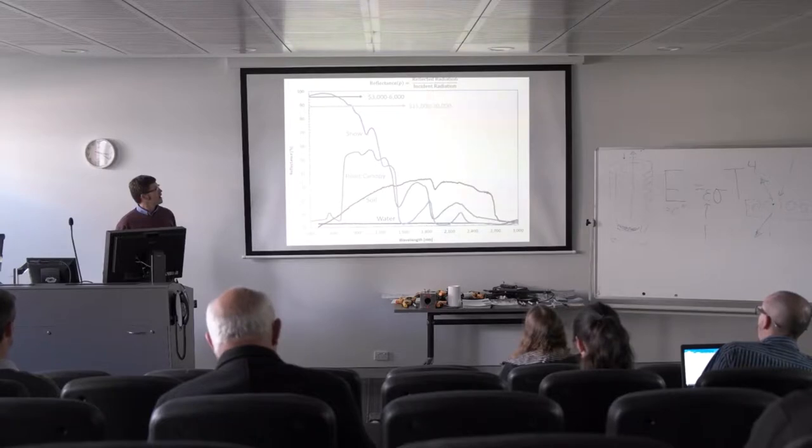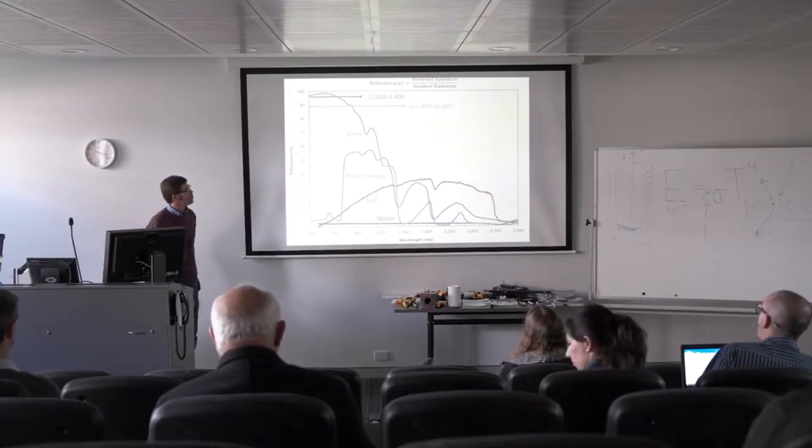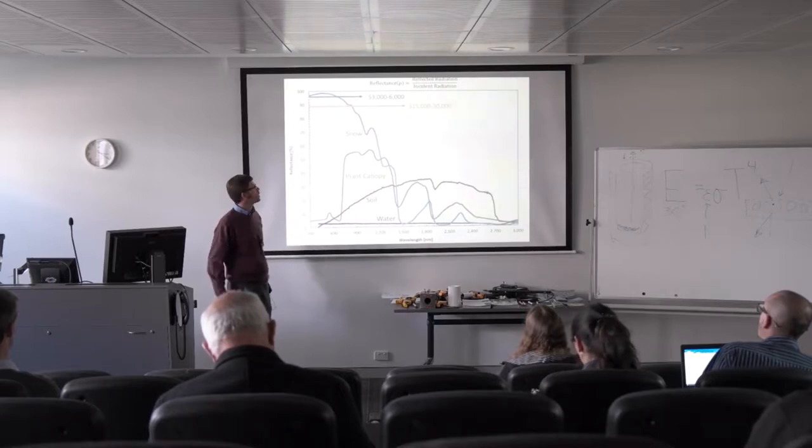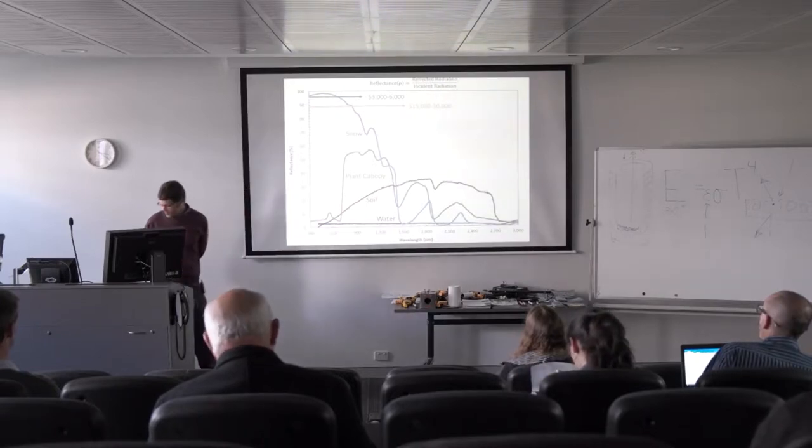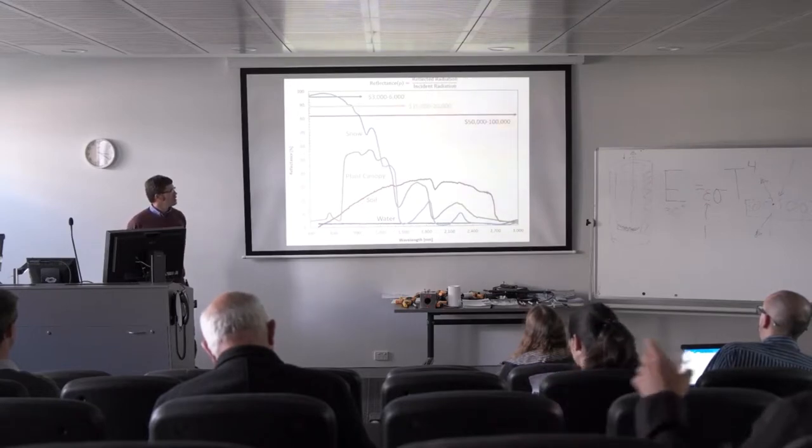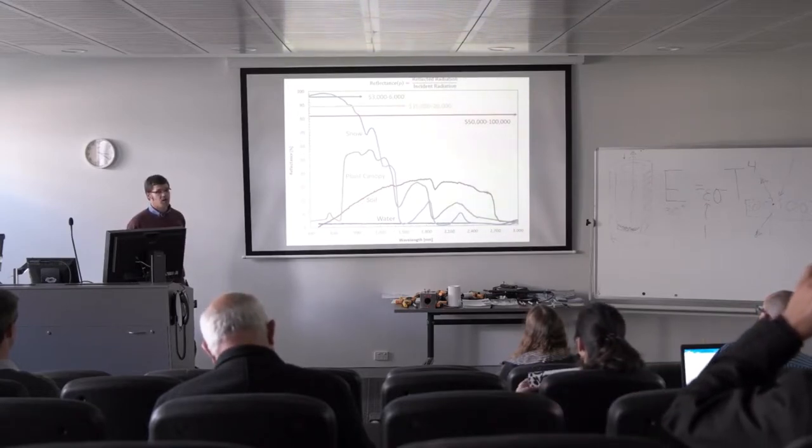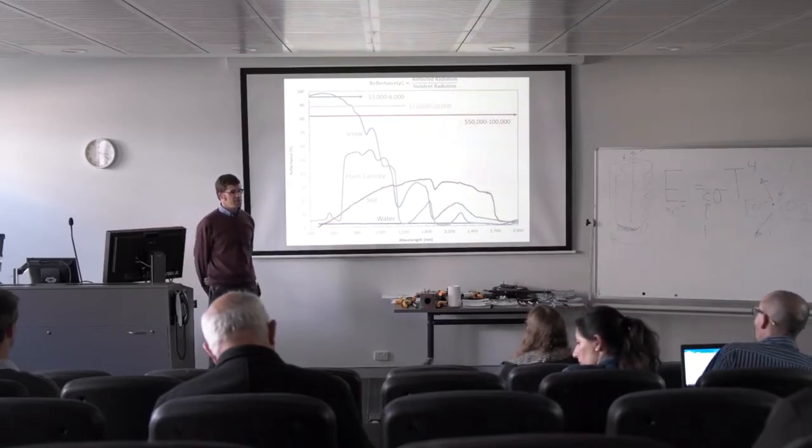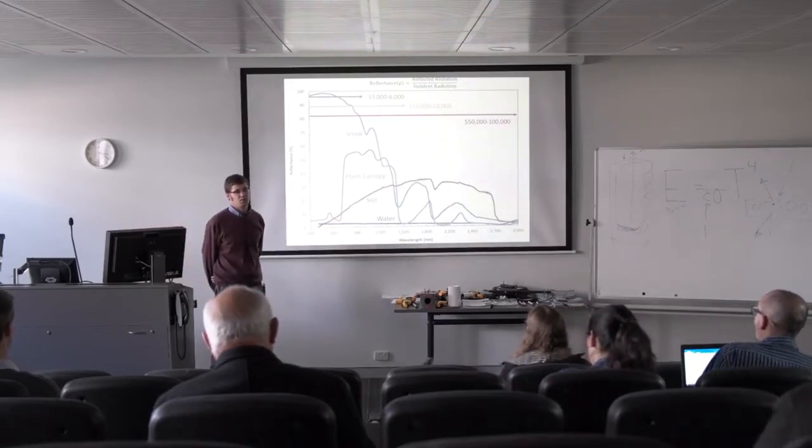To get that same wavelength range plus more of the near infrared, maybe half of the solar spectrum, we're getting a bigger price tag. And to get the whole spectrum, we're talking about a lot more money. The price scales with the amount of information you're measuring.